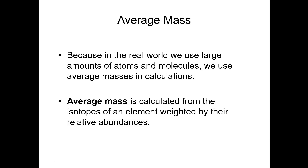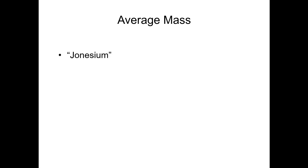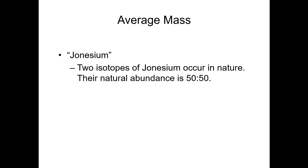We need to use that average mass. To calculate that average mass, we need to know what the abundances are of each of the isotopes and then use the masses of those isotopes. Let's do a really simple example of calculating an average mass. I've invented a new element — it is appropriately named Jonesium. Jonesium happens to be a metal, and like a lot of different elements on the periodic table, Jonesium has two stable isotopes. The first isotope is Jonesium-55, and it has a mass of 55 atomic mass units.